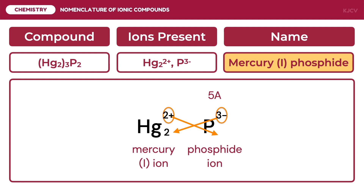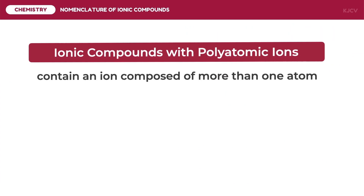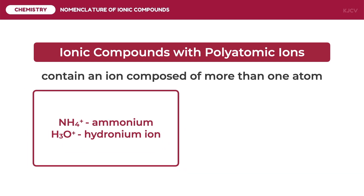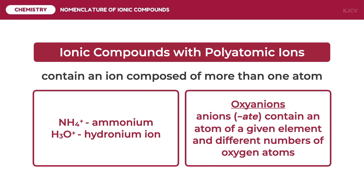We're done discussing ions that are monoatomic in nature. However, there are ionic compounds with at least one polyatomic ion. Polyatomic ions contain an ion composed of more than one atom. This may be a combination of a monoatomic cation and a polyatomic ion, or a polyatomic cation and a monoatomic ion, or both polyatomic ions. The common polyatomic cations are ammonium and hydronium ion. The common polyatomic anions are the oxyanions — anions that contain an atom of a given element with different numbers of oxygen atoms. These are the anions that usually end with the suffix "-ate" or "-ite", and are most often memorized from the periodic table.